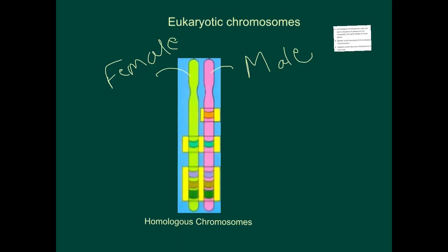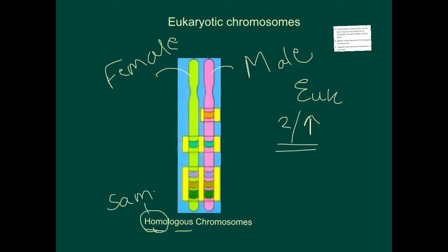We know that eukaryotes have two or more chromosomes in every cell, inside a nucleus. They are called homologous chromosomes because 'homo' means same and 'logus' means location — hence we call them homologous chromosomes.